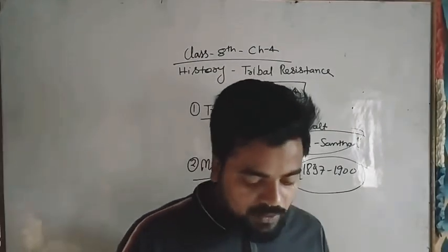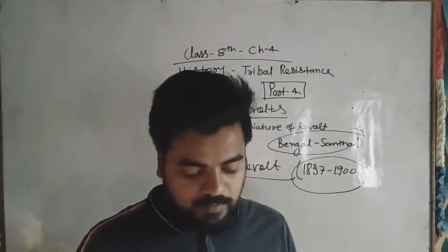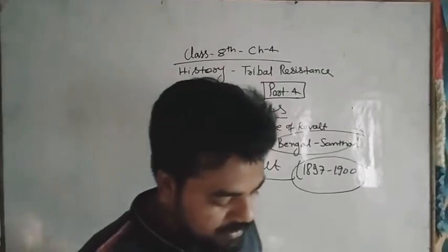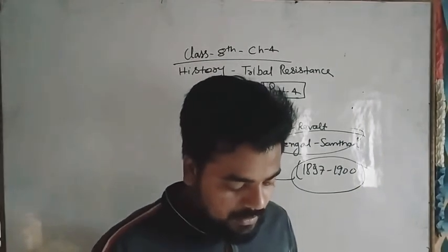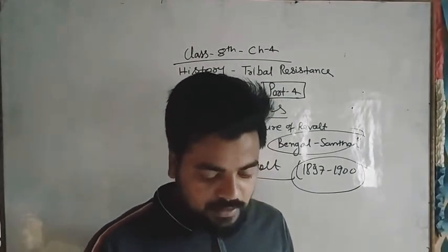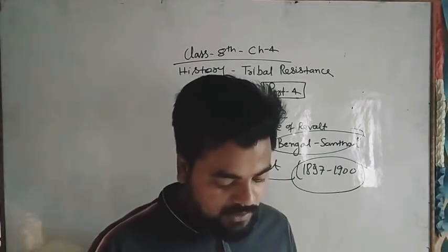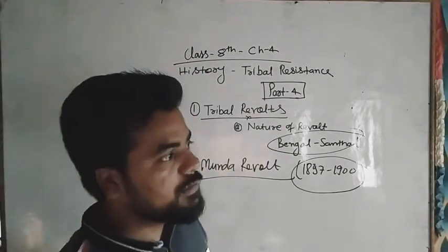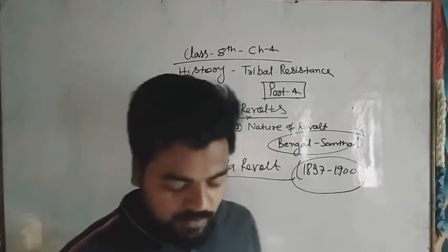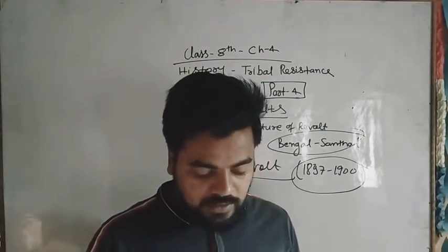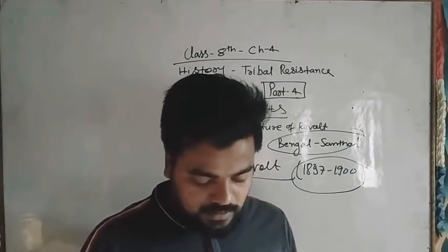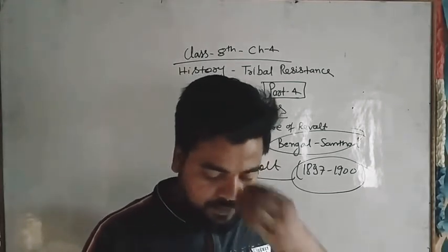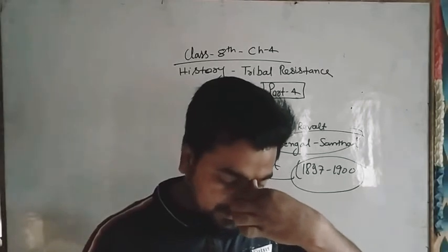The Mundas were a peace-loving tribe of the Chotanagpur region. Being regarded as the original clearers of the forest, the Mundas had always enjoyed preferential land rights in their region. But under British rule, they were denied these privileges by groups such as moneylenders, contractors, Christian missionaries, and British officers, who stopped them from their land.